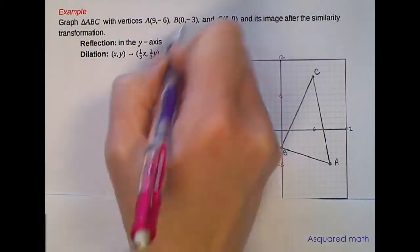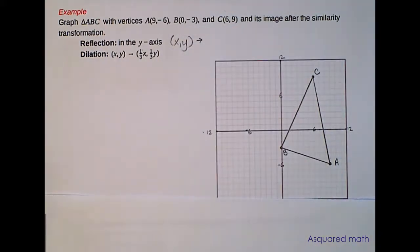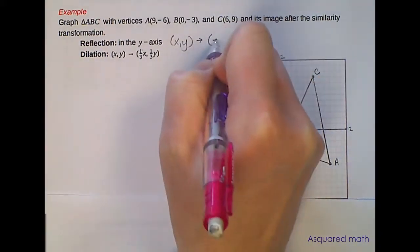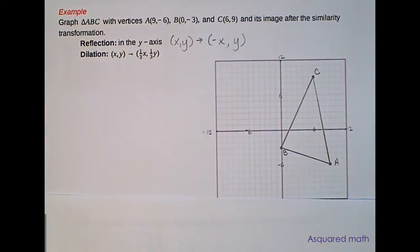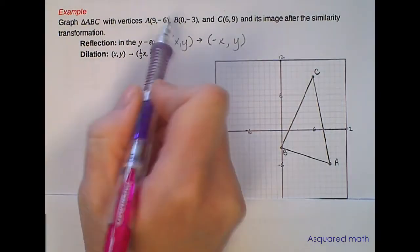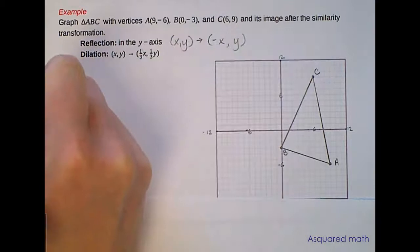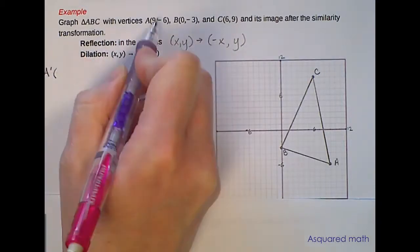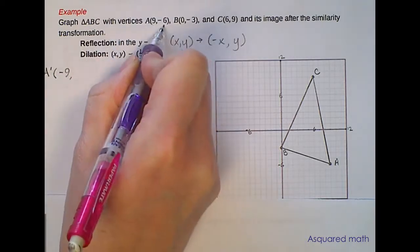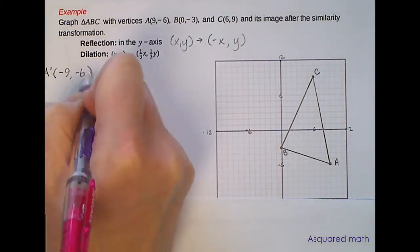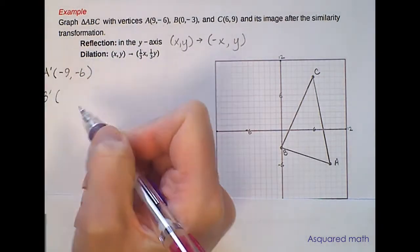If you recall the rule for reflecting over the y-axis is just take the opposite sign of your x value and keep the y value exactly as it is. So if I apply this rule to my A, B, and C coordinates I get A prime, take the opposite sign of 9 so we get a -9 and we keep our -6. B prime, take the opposite sign of 0, well 0 is 0, so we get 0 and then we keep the -3.